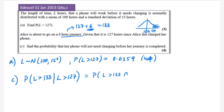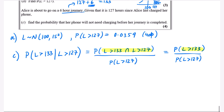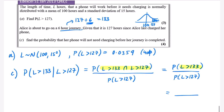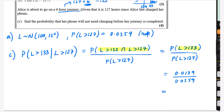Using the conditional probability formula, we get: probability that L is greater than 133 and L is greater than 127, divided by probability that L is greater than 127. Logically, if something needs to be longer than 133 and longer than 127, it only needs to satisfy the stricter condition — being greater than 133. So the highlighted numerator simplifies to P(L > 133), divided by P(L > 127), which is 0.0359. Now let me calculate P(L > 133) from the calculator.